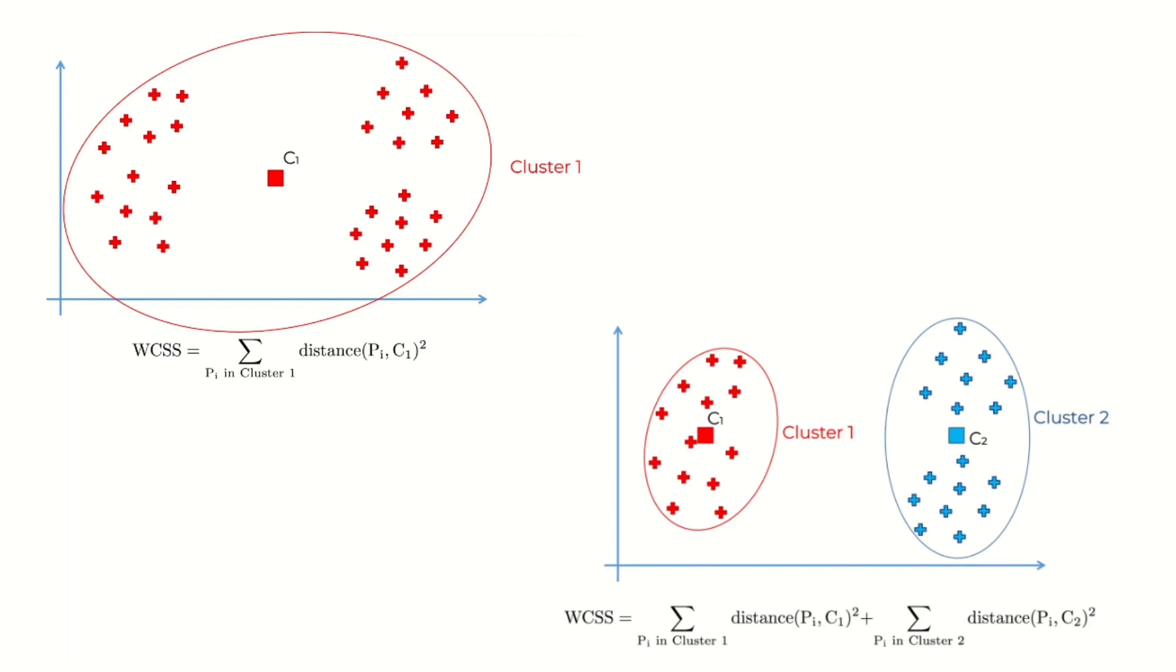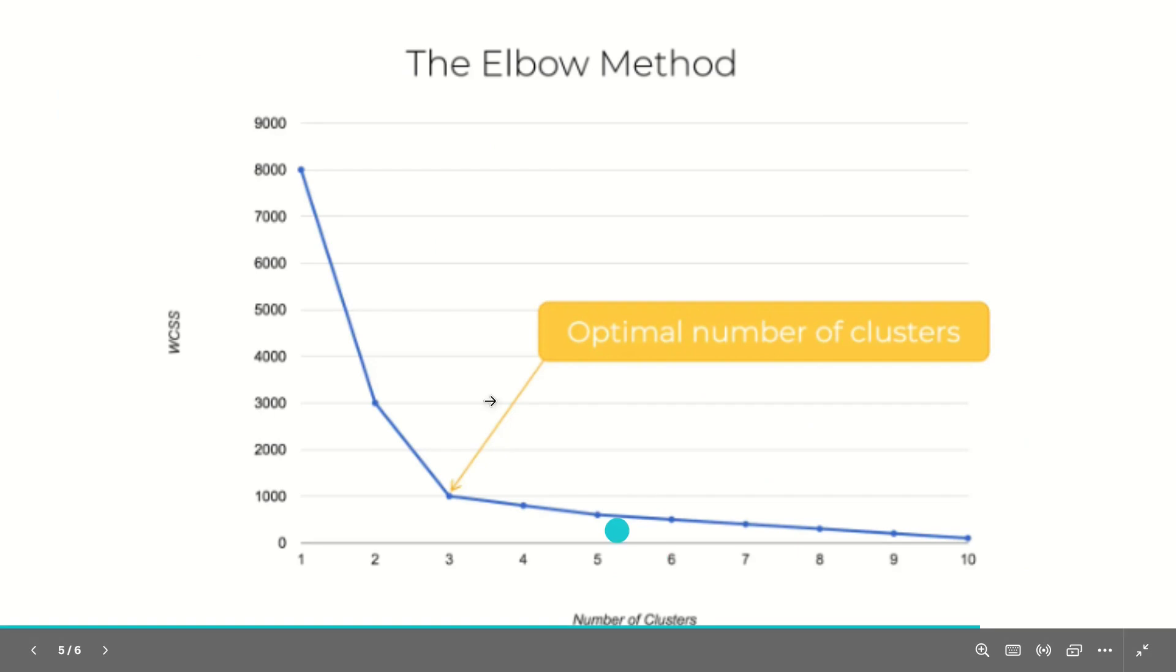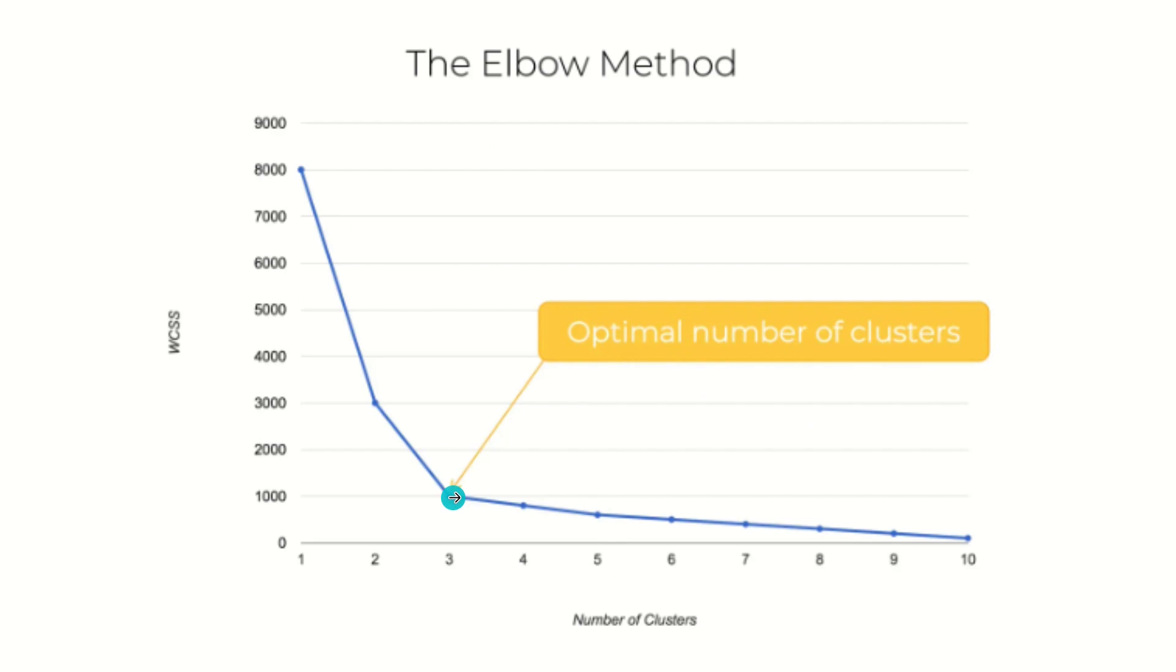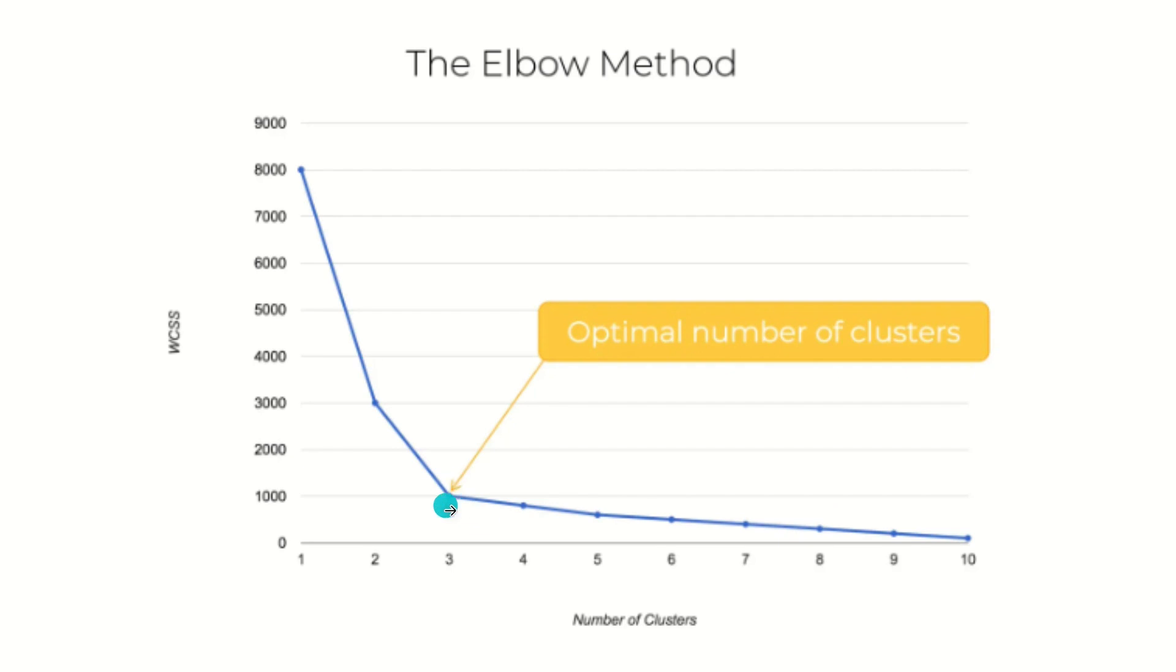We have to find the optimal number of clusters. This is done with the elbow method. The elbow method means plotting the graph between WCSS and number of clusters—you'll find it's decreasing. If you observe this line properly, it's like an elbow. Where there's a sharp dip, that point is your optimal number of clusters.